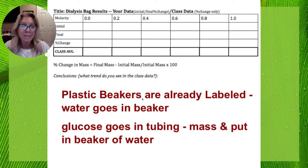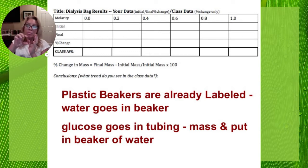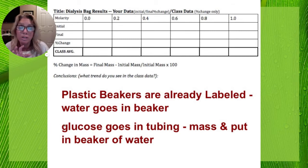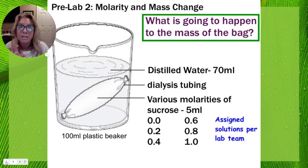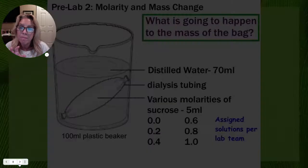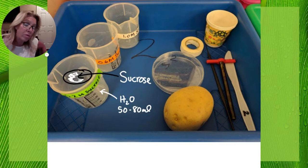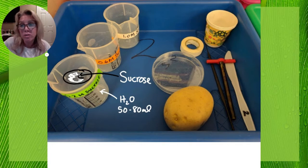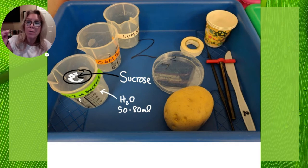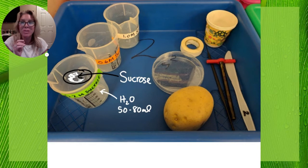I'm giving you plastic beakers that are already labeled, and water is going to go in the beaker. The label represents the dialysis tubing you put in there — it's going to have that molarity of solution inside it. There's no way to label the dialysis tubing itself, so we're labeling the beaker. So if your beaker says 0.2 molar sucrose, that's the sucrose solution in your dialysis tubing; the beaker itself holds water. Water will flow from the hypotonic solution in the beaker into the sucrose solution, moving from a higher water potential to a lower water potential.